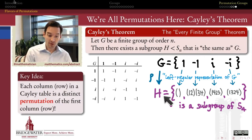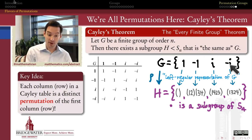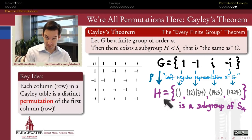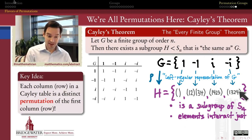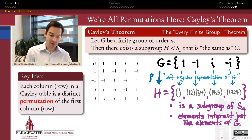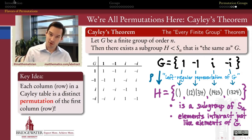I know that sounds like an intimidating mouthful, but now you know exactly what it means. It's the process of representing each one of the elements of some abstract group by a permutation via its left multiplication action on itself — what happens to the elements in this group when I multiply them on the left by each of these things. What's great about this is it also means that this set of four elements will be a subgroup of S4, because all the closure, identity, and inverse properties that the group G has are also going to be satisfied by this subset of elements of S4. Therefore G is the same as this subgroup of S4. So permutations are in a way the Rosetta Stone of finite groups.